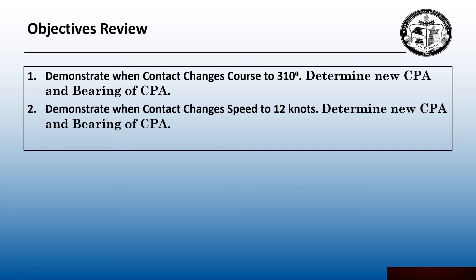To review our objectives for the contact changing course and speed. First we demonstrated when the contact changes course from 270 to 310 we could then determine a new CPA and bearing of CPA to see if they opened up the CPA to meet our required CPA. Second we demonstrated when the contact could slow down to 12 knots we could determine a new CPA and bearing of CPA.